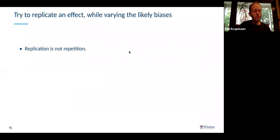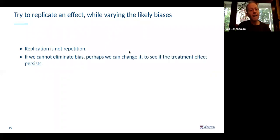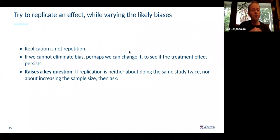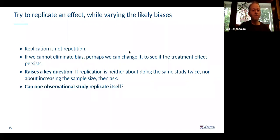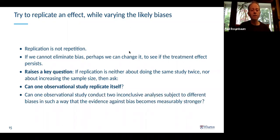The theme of this first part: replication is not repetition. If we repeat exactly, we could easily repeat the biases exactly. If we cannot eliminate a bias, perhaps we can change or vary it to see if the treatment effect reappears when that particular bias has been removed. This raises a key question: can one observational study replicate itself? Can one observational study conduct two inconclusive analyses subject to different biases such that the evidence against bias and in favor of a treatment effect becomes measurably stronger?